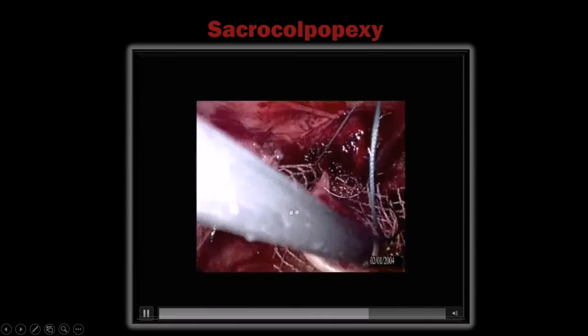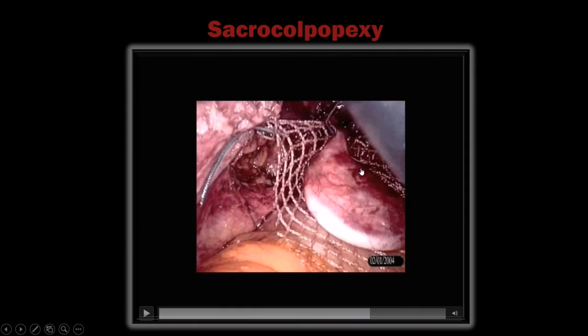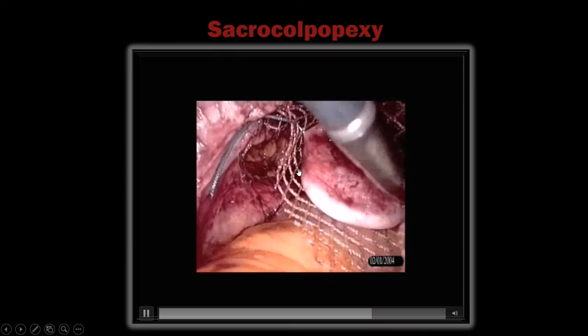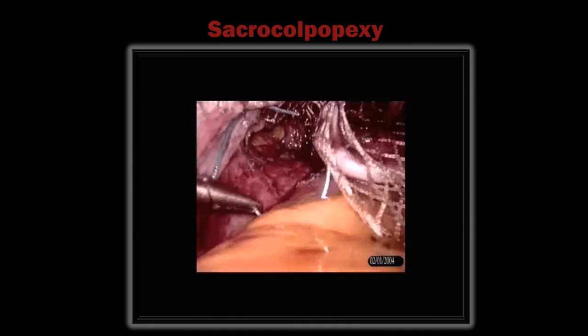The ribbon retractor prevents vaginoclysis — it maintains the space and keeps the vaginal opening wide. This is the anterior vaginal fascia, vagina, and posterior vaginal wall. Three bites are taken on either side and the entire vagina is sandwiched between the two layers of mesh. Bites are taken on the left side, then the right side. The ribbon retractor prevents sutures from accidentally penetrating the vagina.